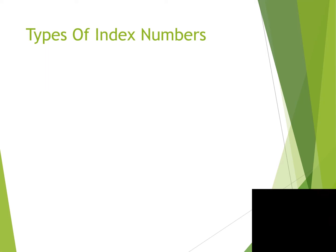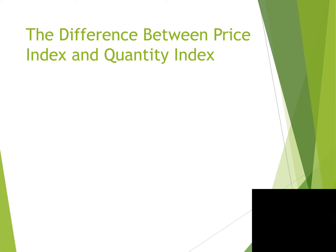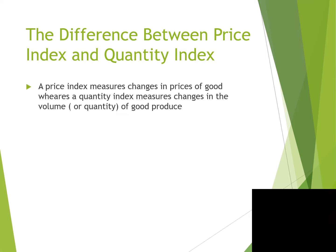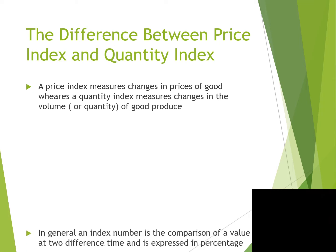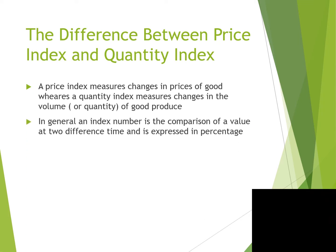Types of index numbers include the Price Index Number and the Quantity Index Number. A price index measures the change in price of goods, whereas a quantity index measures the change in volume or quantity of goods produced. In general, an index number is the comparison of a value at two different times and is expressed as a percentage.